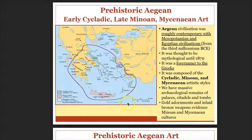The Mediterranean Sea is over here and the Aegean Sea is here, so these ancient cultures — we'll look at their different art and architecture. Roughly, these cultures were contemporary with Mesopotamia and the Egyptian civilizations, and were the forerunners of the Greek culture which will follow after this particular week.